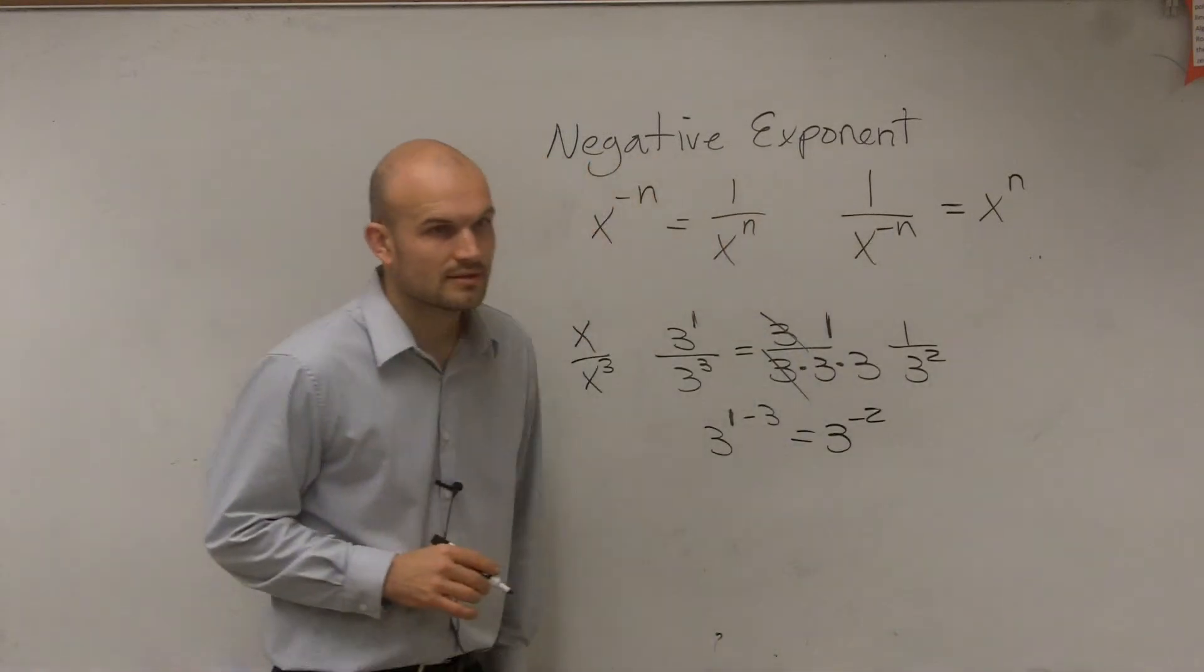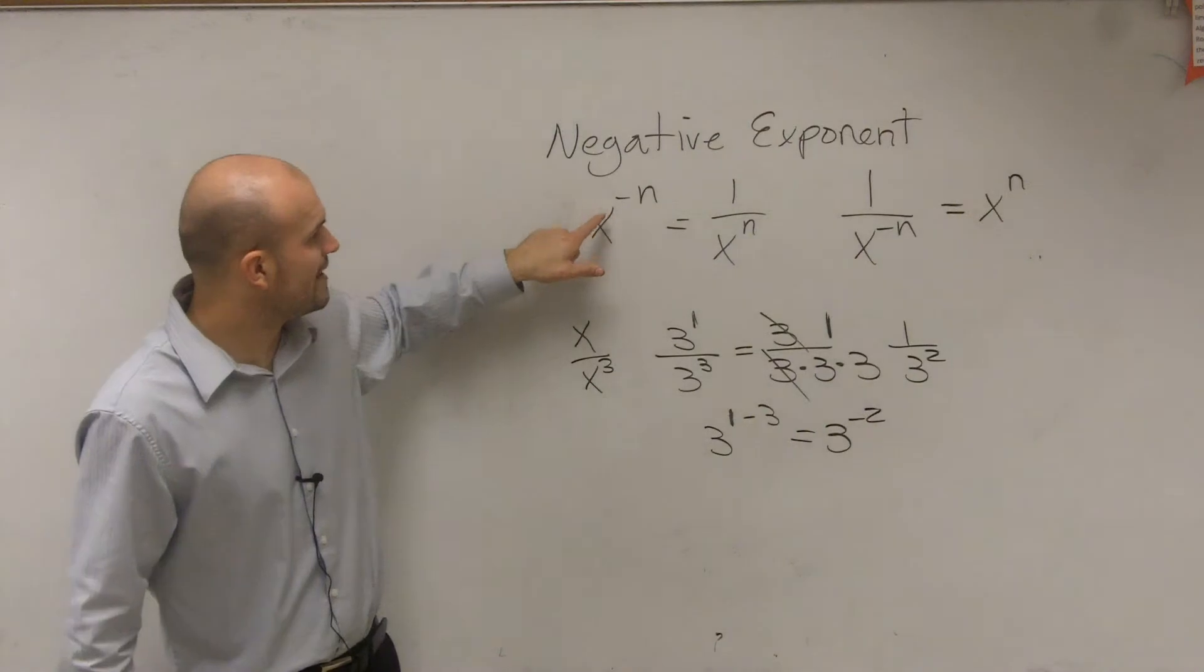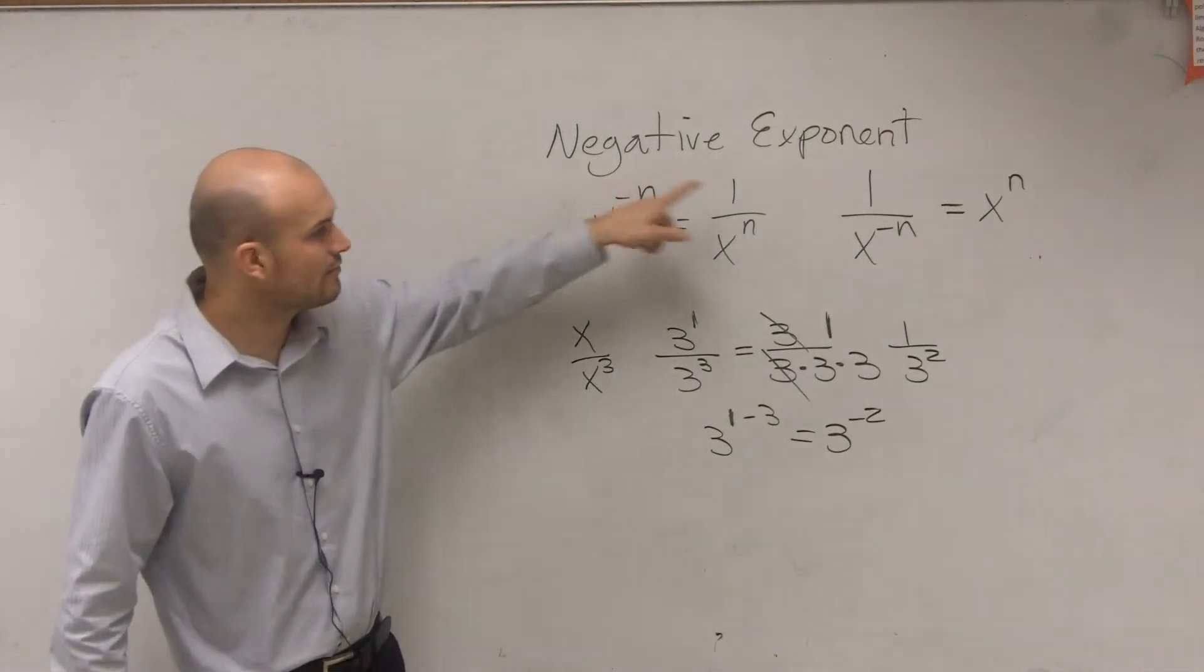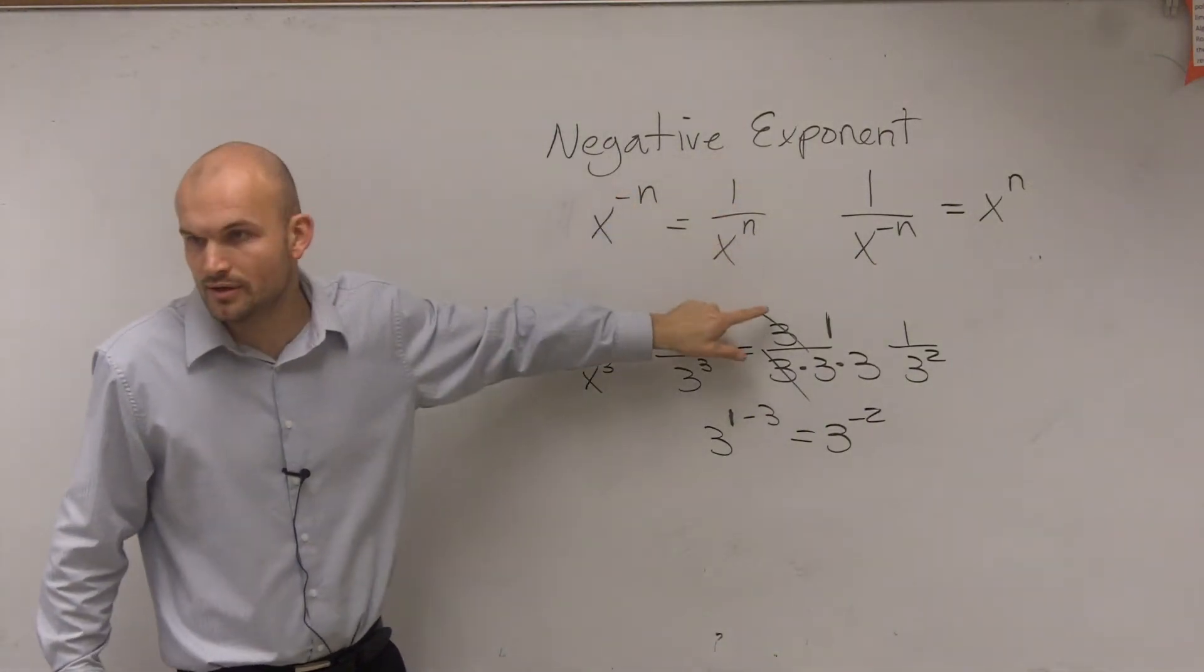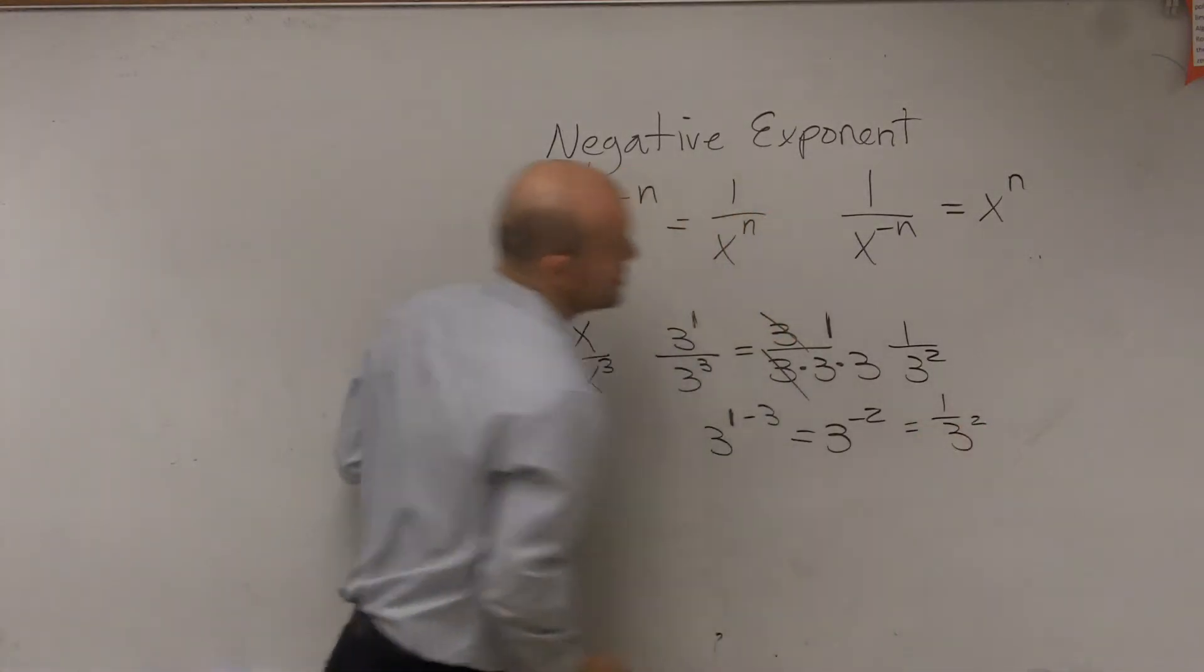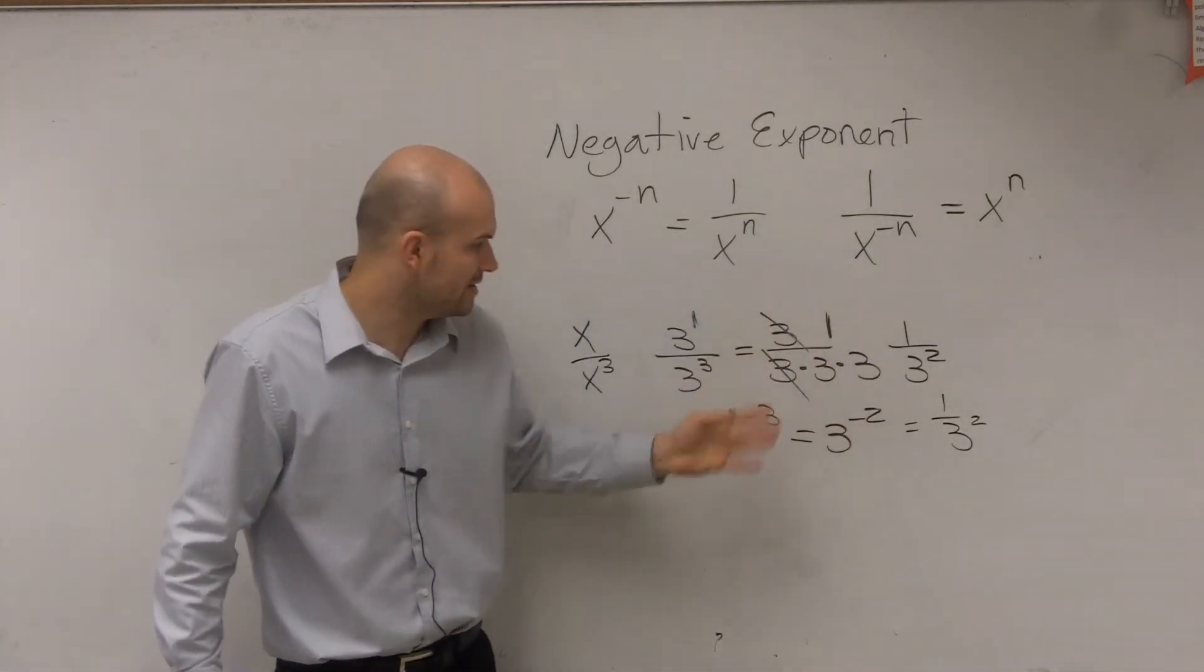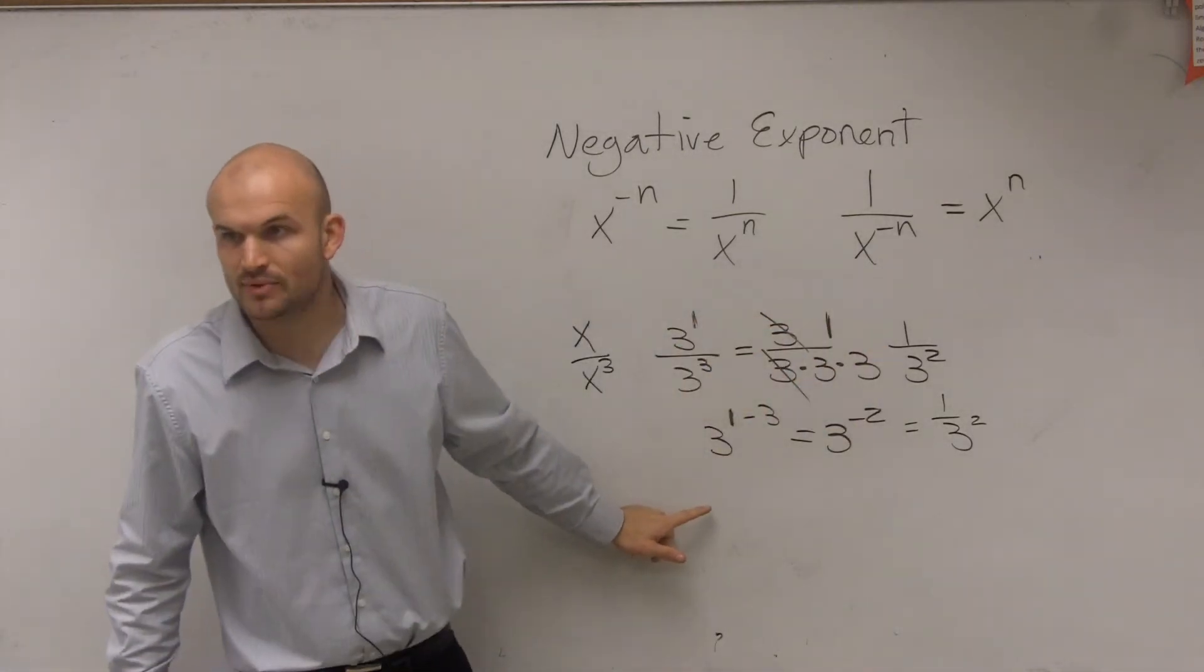Negative 2. All right. But if now when we follow our negative exponent rule, when you have 3 to the negative 2, we write that as 1 over 3 squared. So do you guys see how if I write it out, I get 1 over 3 squared? If I follow the quotient property,